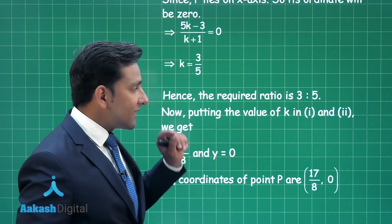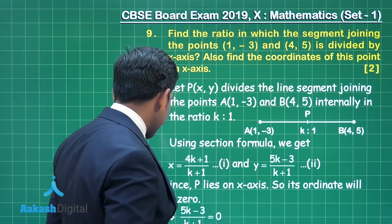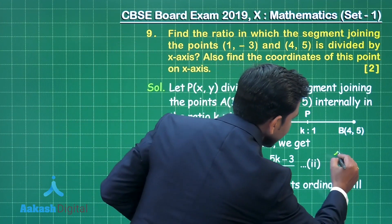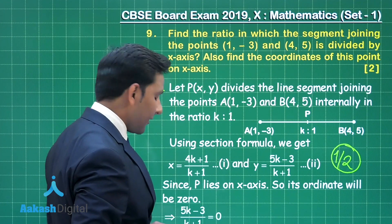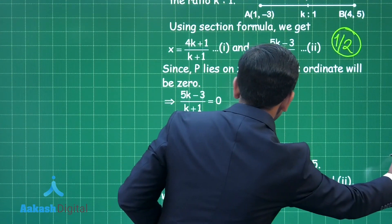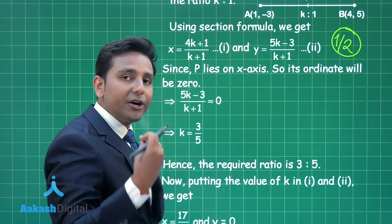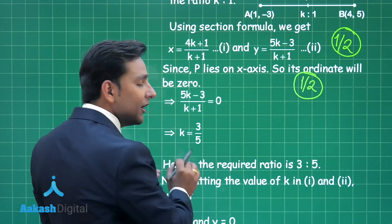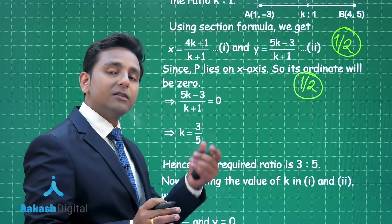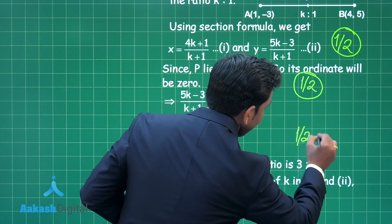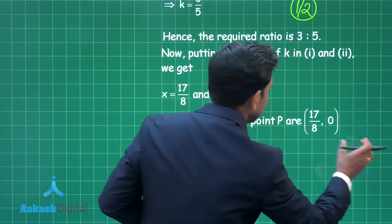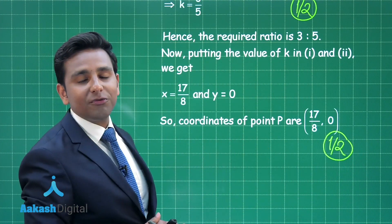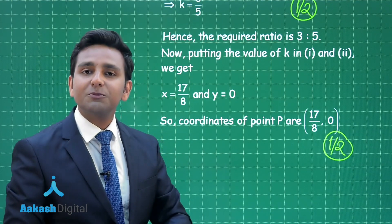Now let us discuss the marking scheme. When you obtain the section formula step, that gives you half a mark. When you put the y-coordinate of point P as 0, that important step gives you another half mark. When you obtain the value of k — the ratio — that gives you the next half mark. The rest half mark is based on the coordinates of point P. This question is based on coordinate geometry.